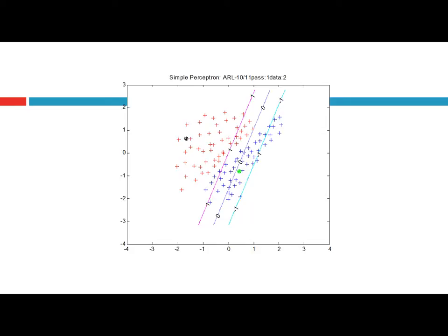Now let us consider the third training instance. This training instance is classified correctly by this decision boundary, and therefore no update is made because the sign of W transpose times xi is exactly equal to yi. Therefore this weight vector W correctly classifies the training instance and no update to the decision boundary or the weight vector W is made. Now let us consider another training instance.